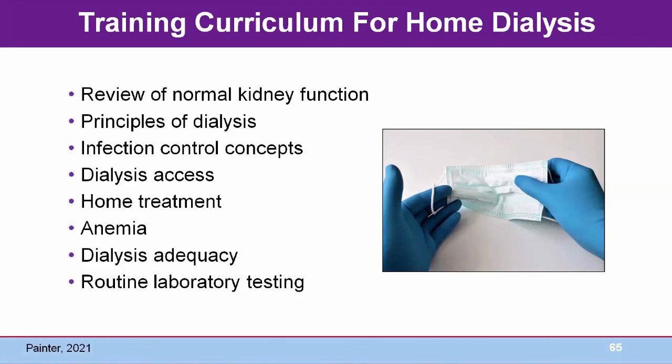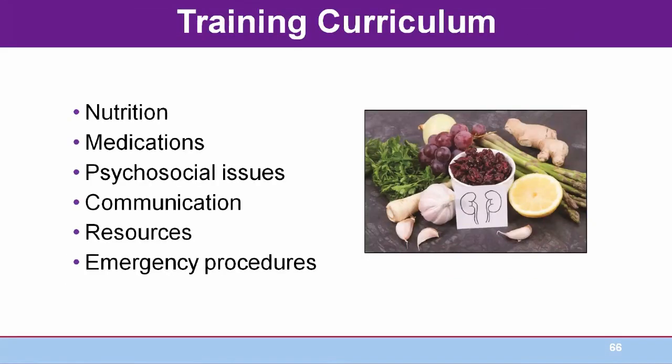Dialysis adequacy is tested every month for hemodialysis patients and every three to four months for peritoneal dialysis patients. During training, patients are taught how to collect specimen samples. Target goals are discussed along with possible adjustments to home therapy if these goals are not met. Routine lab testing is done monthly, quarterly, or semi-annually. A registered dietitian takes part in the patient's nutritional assessment and education. All home medications are reviewed including the indications, dosage, route of administration, and possible side effects.